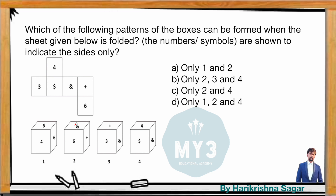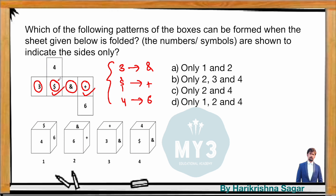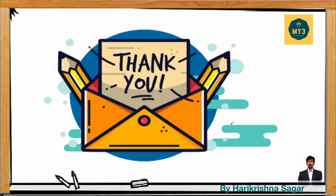Another question: which of the following folded box patterns can be formed when this sheet is folded? From the unfolded paper: three opposite is the 'and' symbol, dollar opposite equals plus, and four opposite is six. In option three, three and the 'and' symbol are shown as adjacent — that's wrong because they should be opposite, so eliminate option three. In option one, four and six are shown as adjacent — but they should be opposite, so eliminate option one too. The answer is only options two and four.